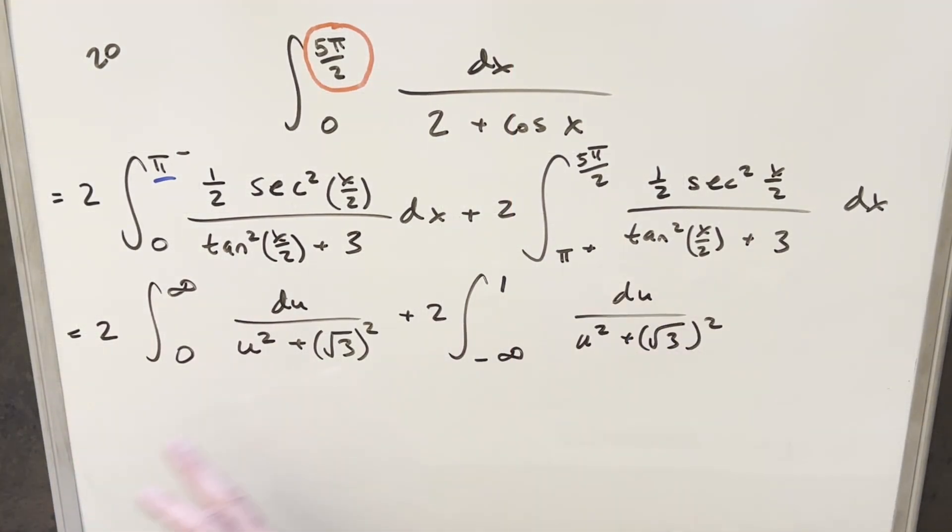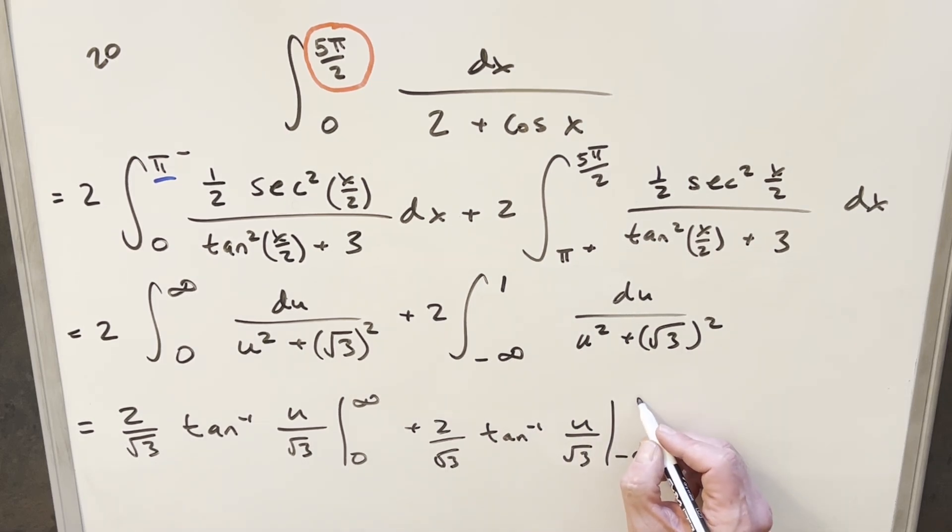But now we have an easy integral here. In both cases, this is just going to be the formula for arctan. So doing this, we're going to have 2, but we need to bring this out in the denominator here, so we're going to have 2 over square root of 3. This is going to be arctan of u over square root of 3. We need to evaluate from 0 to infinity. And then for the next one, again, it's the same thing. 2 over square root of 3, arctan u over square root of 3, and this one's going to be evaluated from minus infinity to 1.